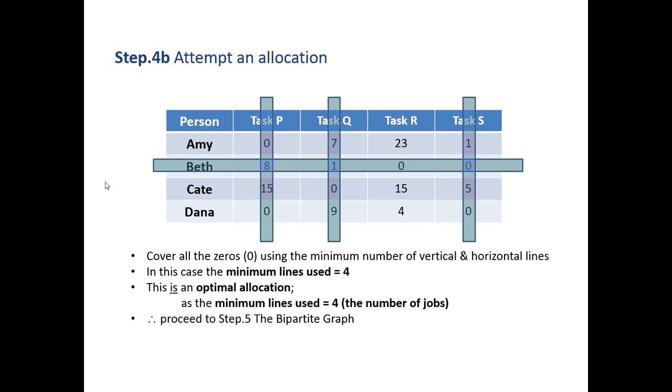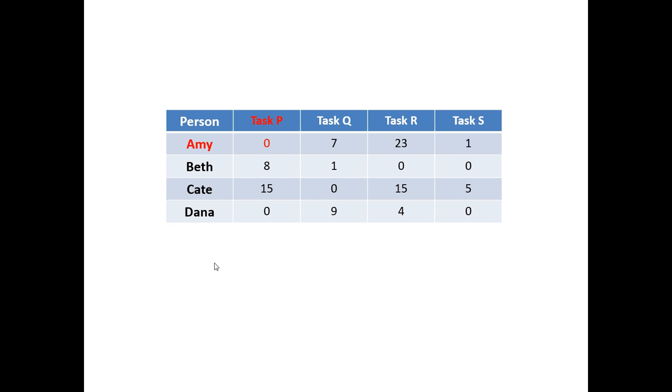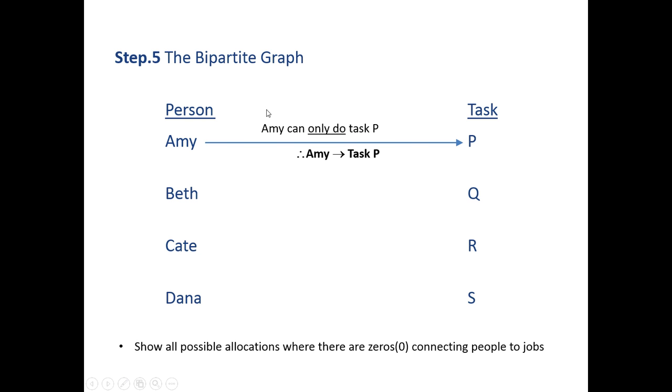We now need to go forward to the bipartite graph. Now the bipartite graph is used to allocate a job to a particular person. Only one job per person can be allocated. So let's have a look. Now Amy, we use the zero to identify which jobs the person can be allocated. Amy only has one zero, so she has to be allocated task P. So Amy can only do task P, so she's allocated task P.